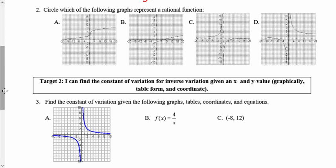And then for 2, it's saying circle the following that represent rationals. If you remember, we have to have that distinctive two-part graph, and then we have to have those asymptotes, the horizontal and vertical asymptotes. Now A does not represent one, neither does B.